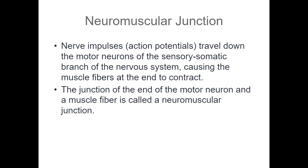When a muscle is going to contract, before it can contract, the brain, the nerves, and the muscle have to connect up. Where the nerve meets the muscle, we call that the neuromuscular junction — it's basically where the motor neuron and the muscle fiber meet. Nerve impulses travel from our brain down through our spinal cord out to our motor neurons, where they touch a muscle fiber and lead to a contraction. Skeletal muscle is a voluntary muscle, which means every movement our brain commands our muscle to do.